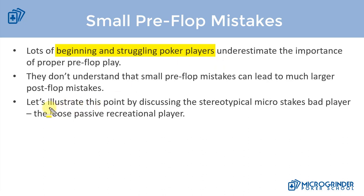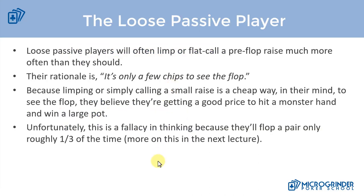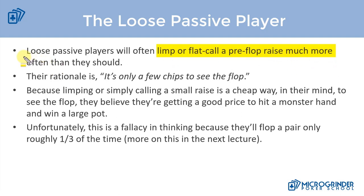Specifically, the players we want to play against are typically the loose passive recreational players at the micro stakes. The loose passive poker player is the type of player that will often limp or flat call a preflop raise much more than they should. Their rationale is: it's only a few chips to see the flop, I can open limp or simply call, and if I don't make anything on the flop I can just fold.